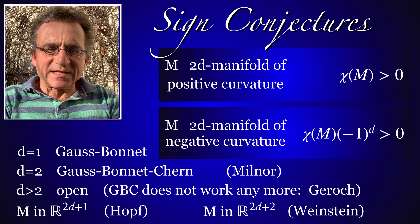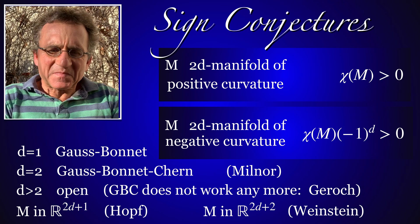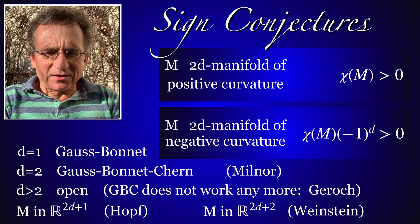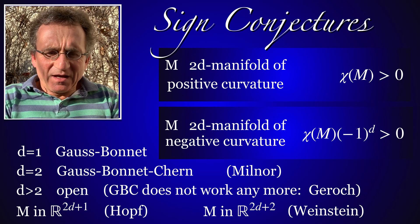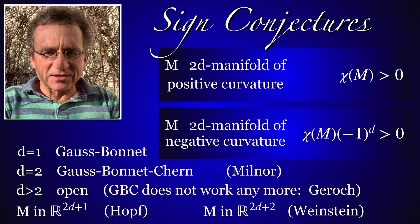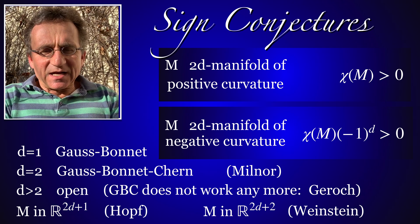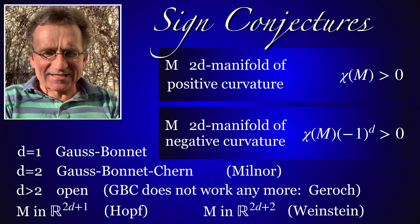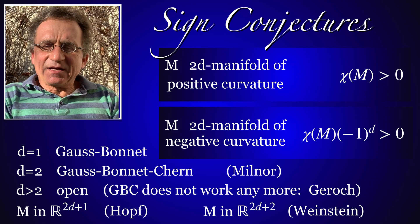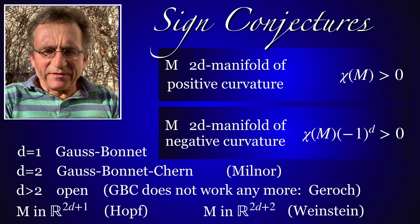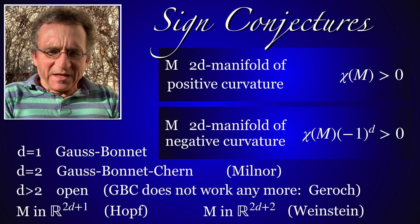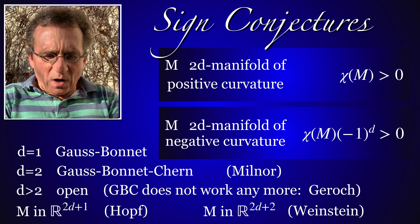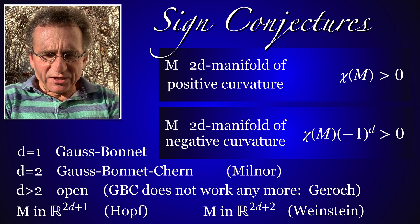For two-manifolds there is the Gauss-Bonnet result. For four-manifolds the generalized Gauss-Bonnet-Chern result works, as Milnor realized about 50 years ago. But Gauss-Bonnet stops working already in dimension six or higher. The conjecture has however been confirmed for manifolds that are embedded in codimension one or codimension two.